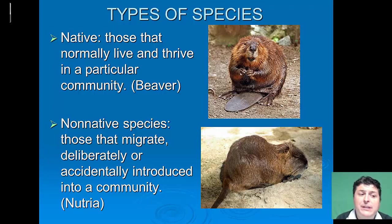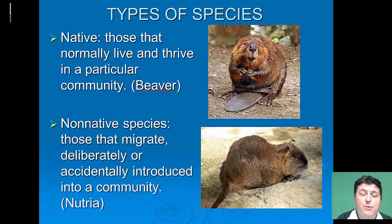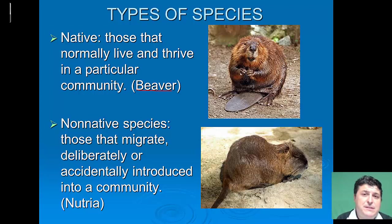Native species are those that normally live and thrive in a particular community — for example, a beaver is a native species to Virginia. Non-native species are those that migrate or are deliberately or accidentally introduced into a community. A great example is the nutria, which was deliberately introduced into the area during the heyday of the fur trade to add another fur-bearing species. When the fur trade declined shortly after, the nutria remained. Though it occupied a similar niche to the beaver, it didn't perform the same ecological jobs as well. As a result, the nutria became a nuisance species, and some non-native species can actually out-compete native ones and put them at risk for extinction.